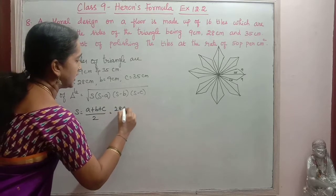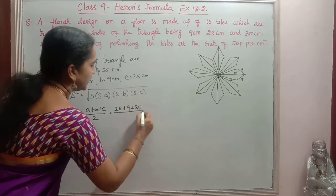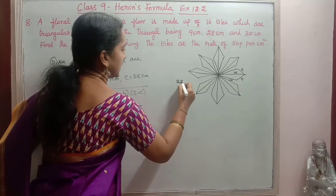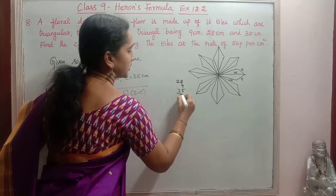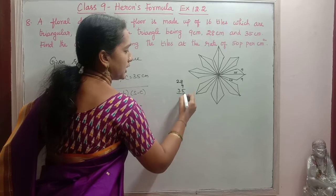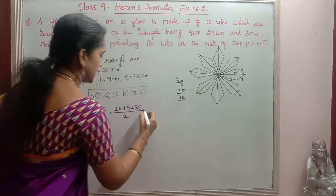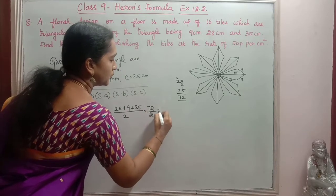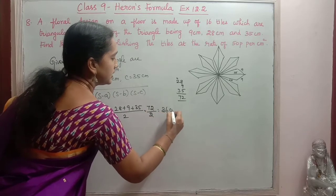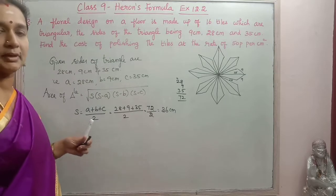So a is 28, b is 9, c is 35 divided by 2. So 28 plus 9 plus 35. So 9 plus 5, 14, 14 plus 8, 22. So 4, 4 plus 3, 7, 72 by 2. 72 by 2 will be 36 cm. So that is the semiperimeter.